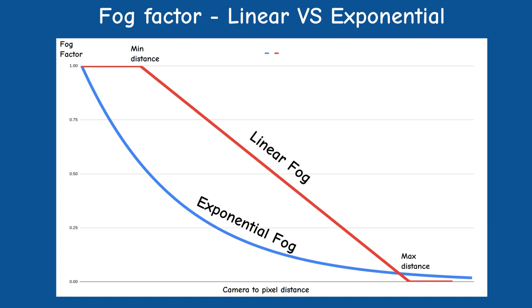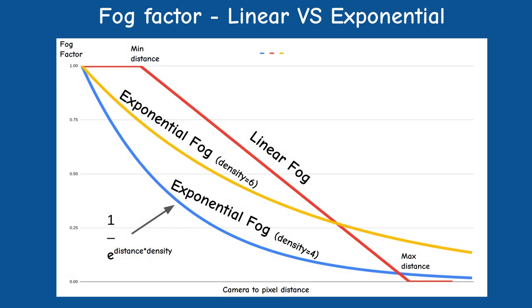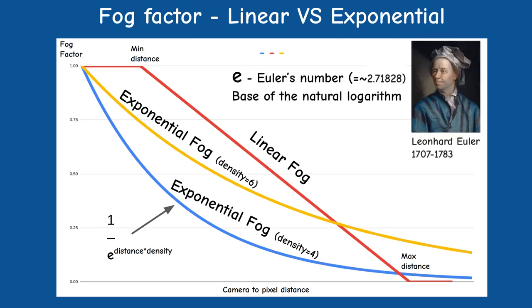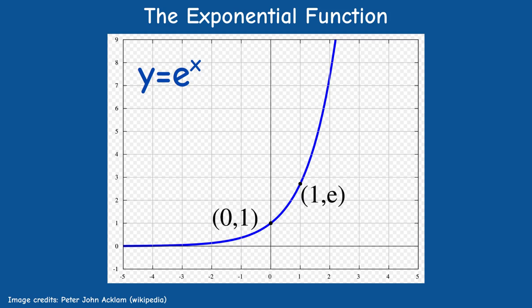The second fog technique is exponential fog. As the name suggests, this type of fog increases exponentially rather than linearly as we move away from the camera. We calculate it as one divided by the exponential function of the distance from the camera to the pixel multiplied by a density factor. The density factor is a number that allows you to tune the fog effect up or down. E, also known as Euler's constant, is the base of the natural logarithm. The exponential function — raising E to the power of some number — has been found very useful in physics, chemistry, and economics, specifically whenever a quantity grows or decays at a rate proportional to its current value.